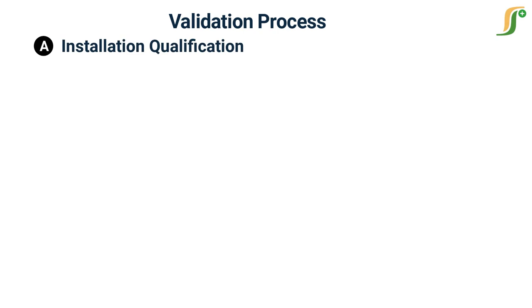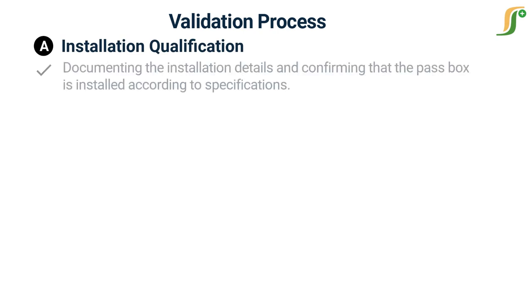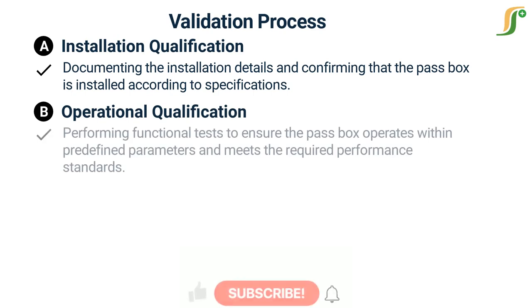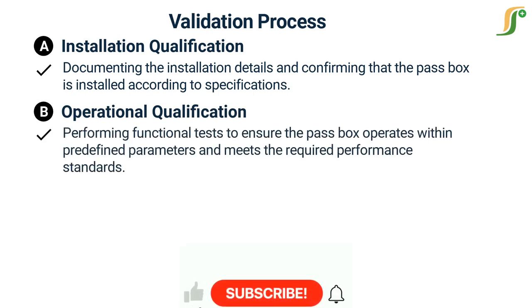The validation process for cleanroom pass boxes typically involves three steps. First, Installation Qualification: documenting the installation details and confirming that the pass box is installed according to specifications. Second, Operational Qualification: performing functional tests to ensure the pass box operates within predefined parameters and meets the required performance standards.